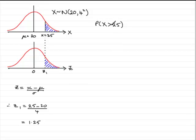To work out the probability that x is greater than 25, we know this is exactly the same as the probability that z is more than 1.25 standard deviations. I'll write it back in as 1.25.